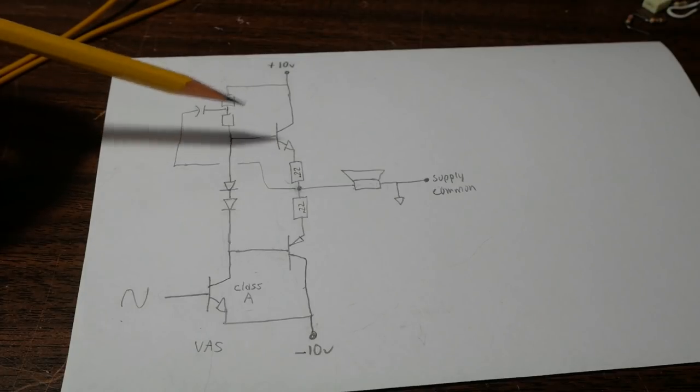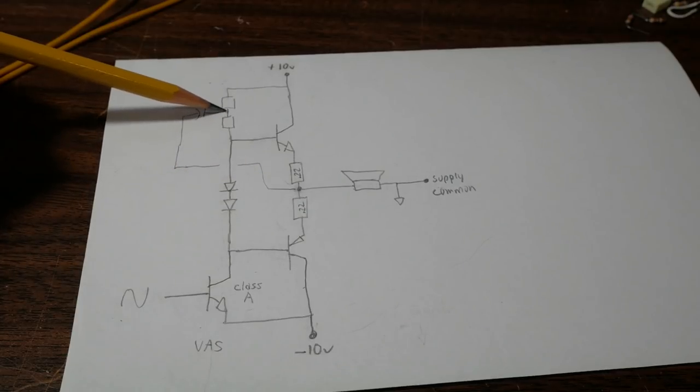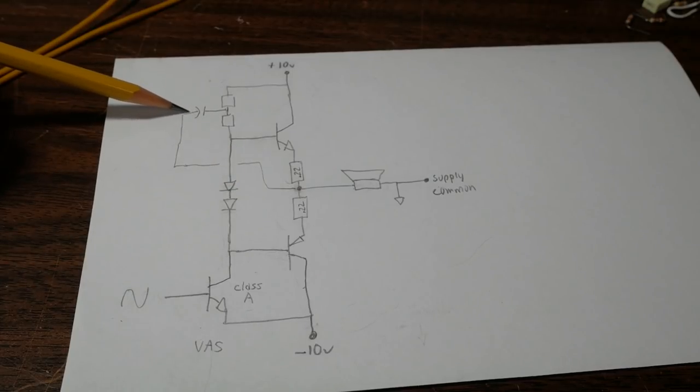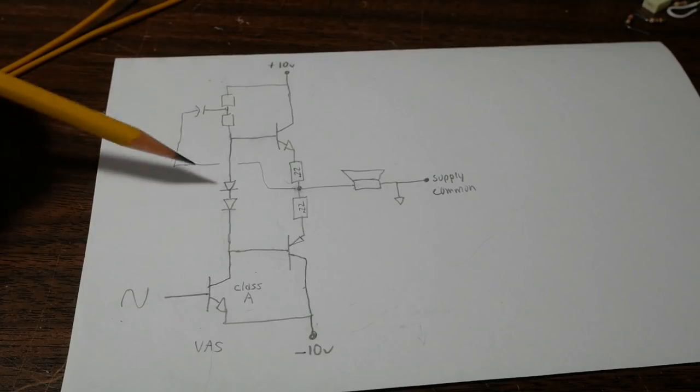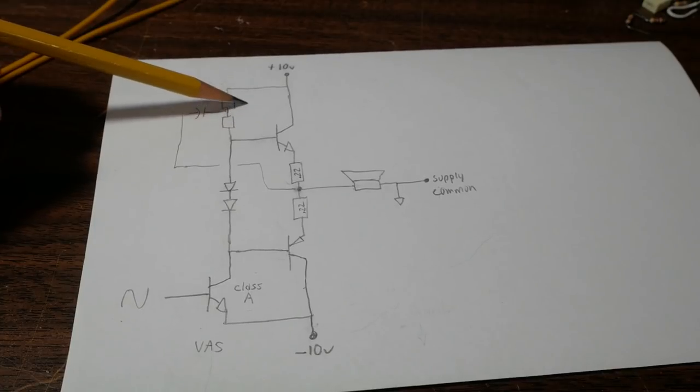So what happens is this capacitor is charged up to 5 volts. So if this is now 10 volts, well, we're going to have 10 volts on this side of, on this plate of the capacitor. So relative to ground or the supply common, this is 15 volts now. Yes, it is actually higher than the supply voltage.